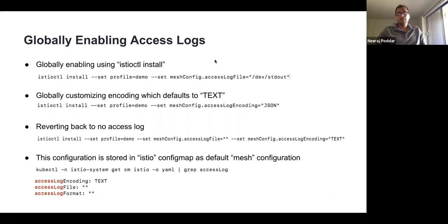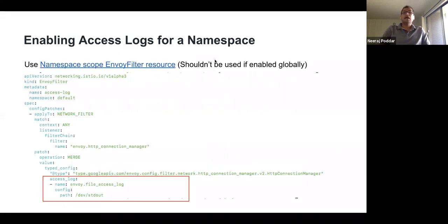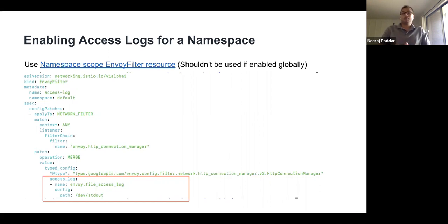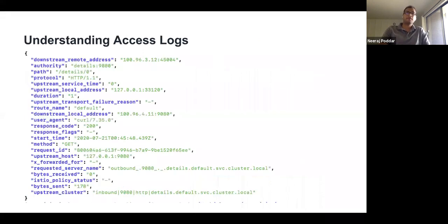To enable access logs for a specific namespace rather than the entire cluster, you can use an EnvoyFilter resource — there is a sample available on GitHub. Two important notes: the EnvoyFilter API is a break-glass API, so incorrect configuration can affect traffic throughout your cluster — always test it in a demo namespace or spare cluster first. Also, do not use EnvoyFilter if you have already turned on access logs globally, as the merge semantics will result in duplicate log entries. You can also add workload selectors to scope logging to a specific workload.